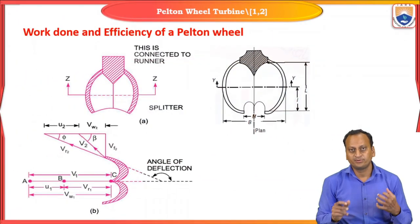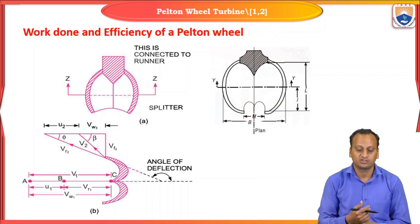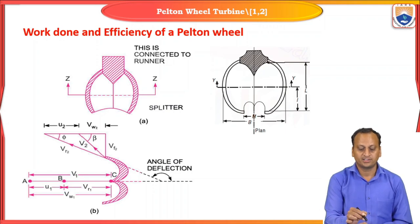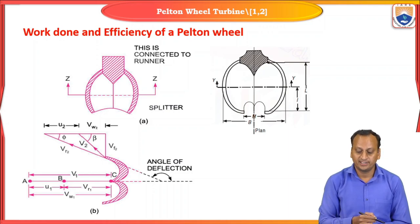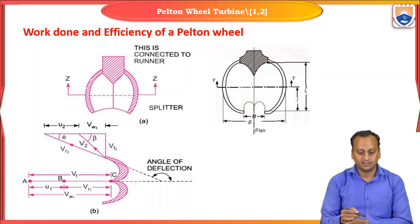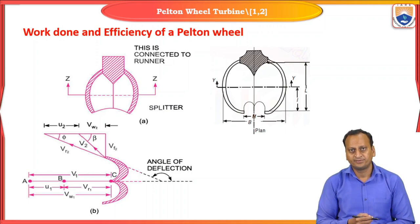The maximum amount of energy can be utilized by the bucket. In order to utilize or consume the maximum energy possessed by the water, the bucket is a double hemi-ellipsoid shape. There is a splitter that splits the jet into two equal halves so that the axial thrust becomes neutralized. Here we can see the cross-section of the bucket and various parameters and nomenclature of a bucket of a Pelton wheel turbine.